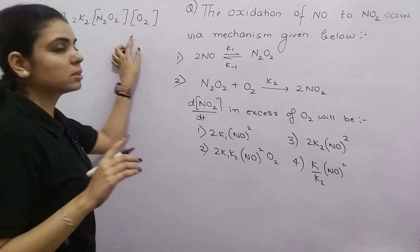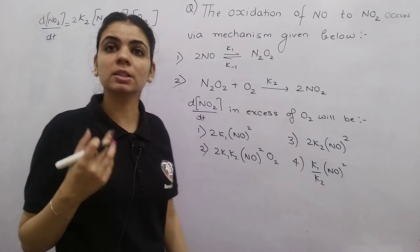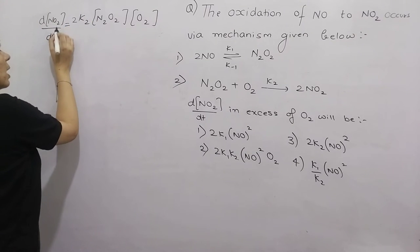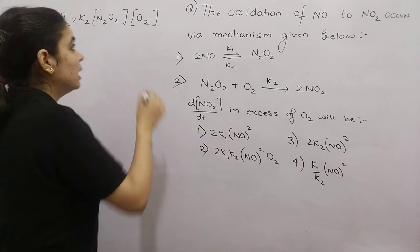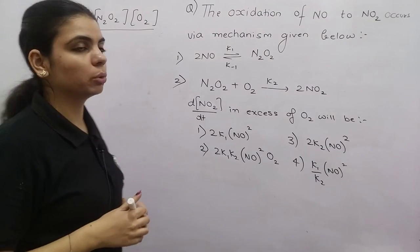Now my answer has come, absolutely correct. But if you check the options, you won't get such an answer. Why? Because in the options, only NO is present. But our answer has N2O2 and O2 present.